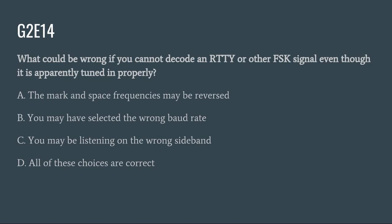G2E14: What could be wrong if you cannot decode an RTTY or other FSK signal even though it is apparently tuned in properly? A. The mark and space frequencies may be reversed. B. You may have selected the wrong baud rate. C. You may be listening on the wrong sideband. Or D. All of these choices are correct. The correct answer is D: all of these choices are correct.